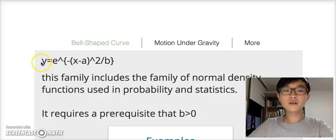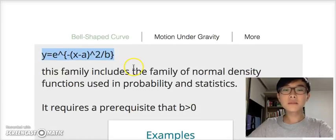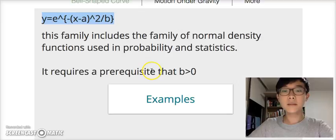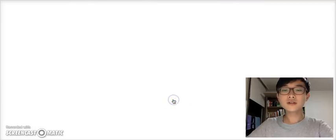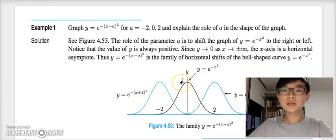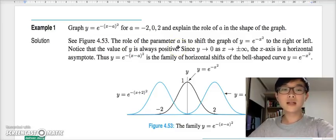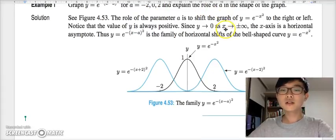The bell-shaped curve is a type of function which takes this form: y = e^(-(x-a)^2/b). This family is normally used in terms of probability and statistics. Let's take a look at some examples. The first example takes an assumption that b is greater than 0 and is a constant. Here we have example number one: Graph y equals e^(-(x-a)^2) for a equals -2, 0, 2, and explain the role of a in the shape of the graph.